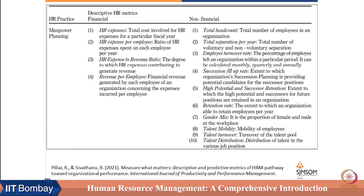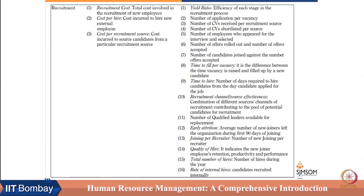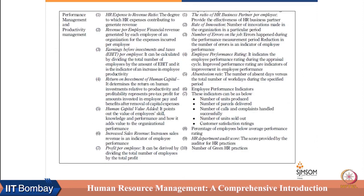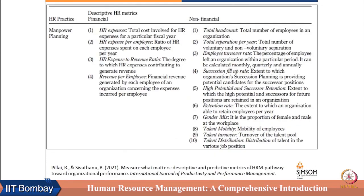There can be various types of data, and these can be broadly divided into lagging indicators and leading indicators, descriptive HR metrics and prescriptive HR metrics. Descriptive HR metrics are based on past data, while prescriptive HR metrics also take into account future projections of the data. These include manpower planning, recruitment, training and development, performance management, and productivity management related data.